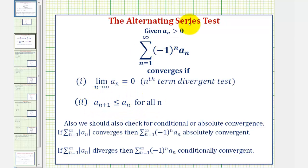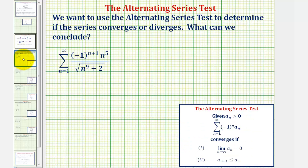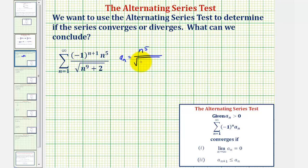When we have an alternating series, we can also test for what's called conditional or absolute convergence, which we'll discuss more in a future lesson. Going back to our example, notice how a sub n, the non-alternating part, would be equal to n to the fifth divided by the square root of n to the ninth plus two.